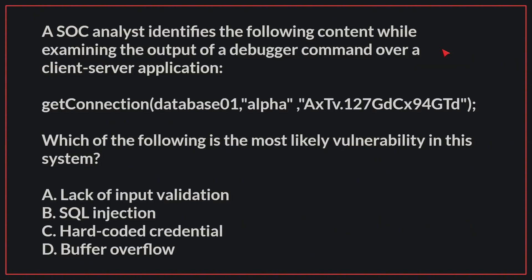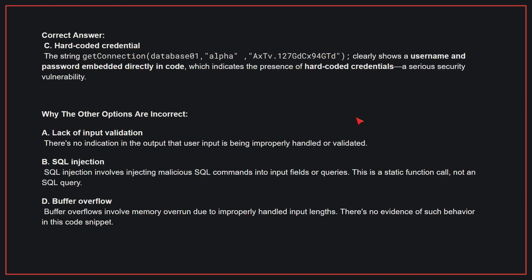A SOC analyst identifies the following content while examining the output of a debugger command over a client-server application. Which of the following is the most likely vulnerability in this system? The correct answer is C: hard-coded credentials. The string clearly shows a username and password embedded directly in code, which indicates the presence of hard-coded credentials, a serious security vulnerability.